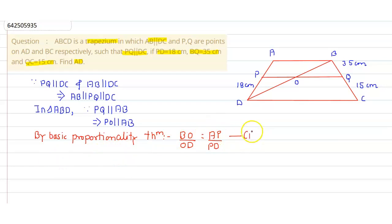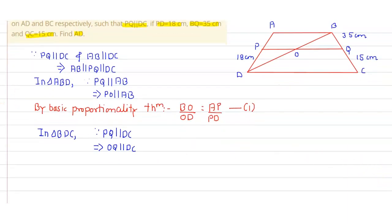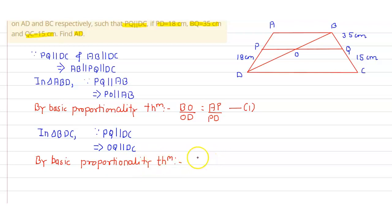Similarly, in triangle BDC, since PQ is parallel to DC, OQ is also parallel to DC. By the Basic Proportionality Theorem again in triangle BDC, BO by OD equals BQ by QC.